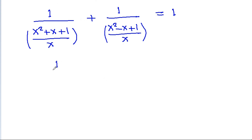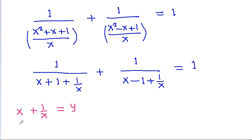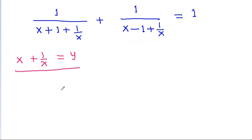This simplifies to 1/(x + 1 + 1/x) + 1/(x - 1 + 1/x) = 1, by dividing numerator and denominator by x. If we take x + 1/x = y, then we get 1/(y + 1) + 1/(y - 1) = 1.